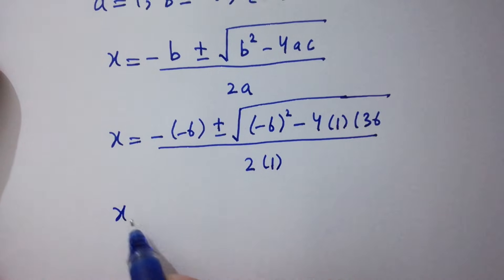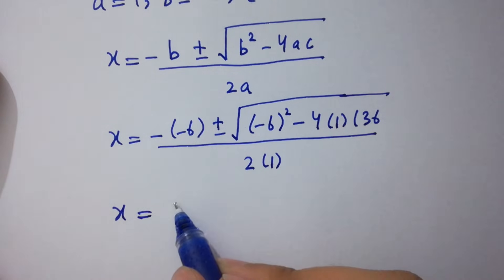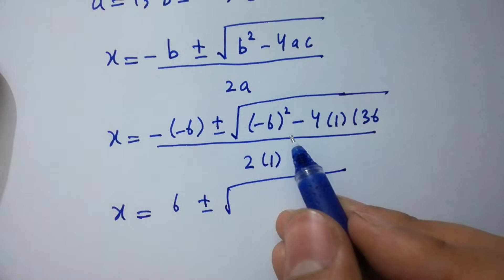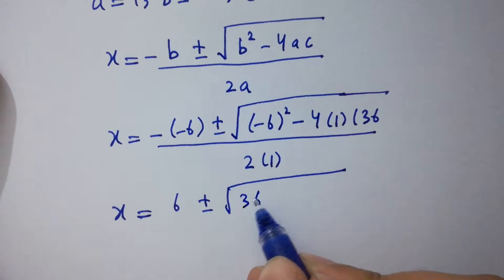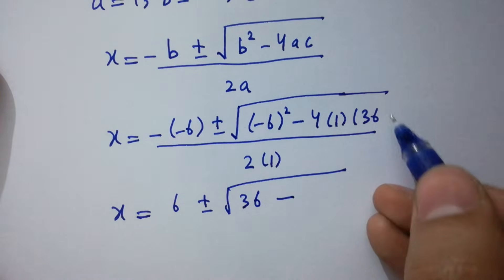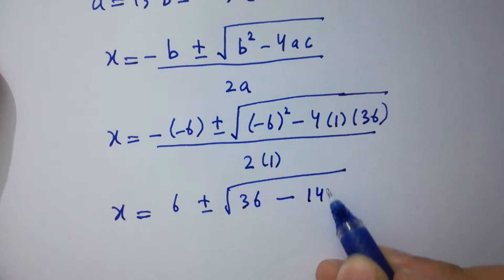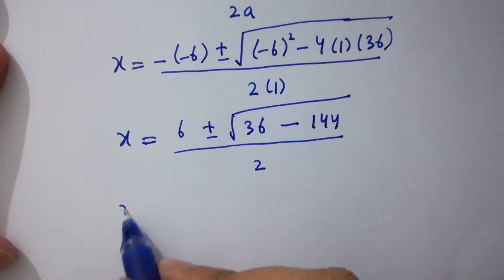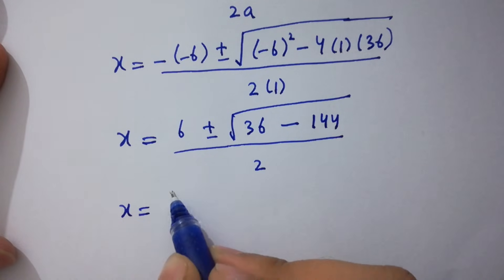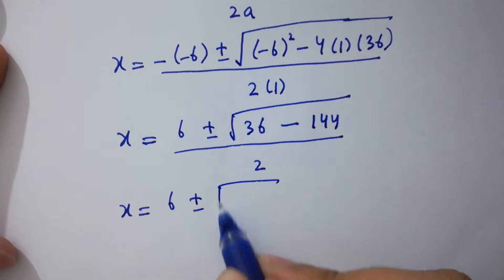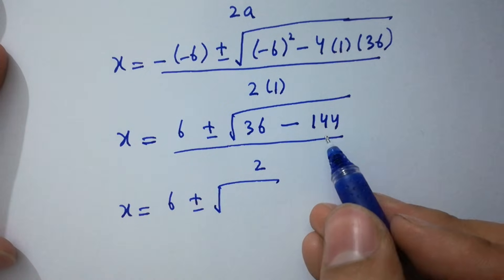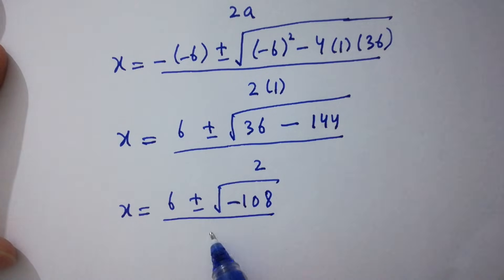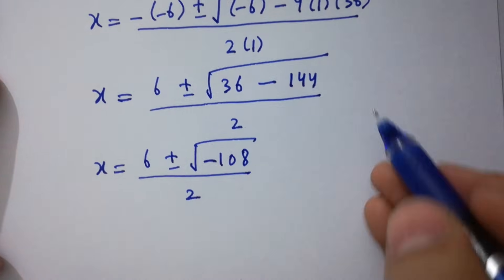Substituting: x equals 6 plus or minus square root of (36 minus 4 times 1 times 36), over 2. That gives x equals 6 plus or minus square root of (36 minus 144), over 2, which is square root of negative 108 over 2.